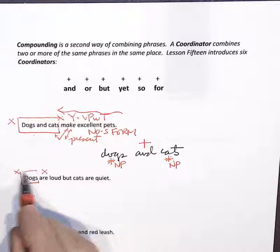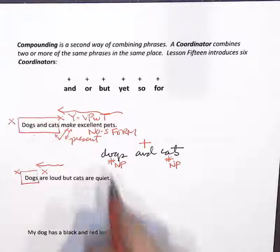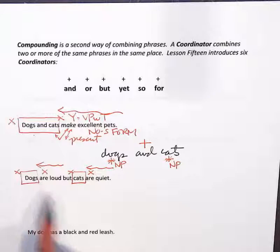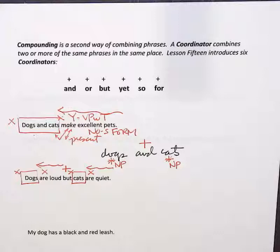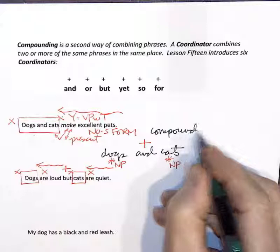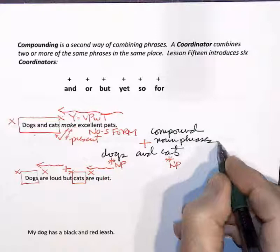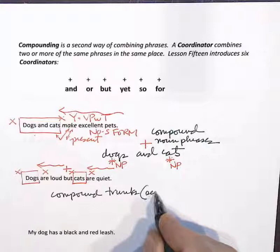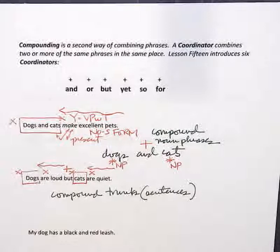'Dogs are loud, but cats are quiet.' We have two yes-or-no questions, two sentences, and we combine them with the coordinator 'but.' Our first example had compound noun phrases. Our second example has compound trunks — compound sentences.